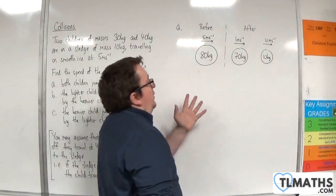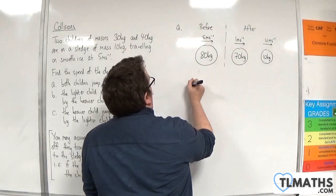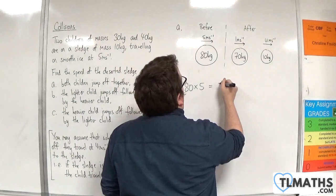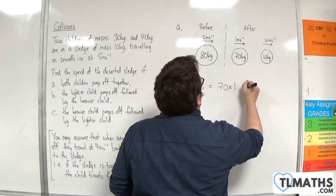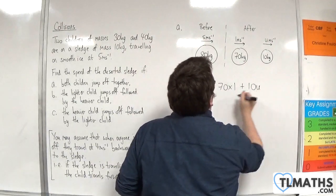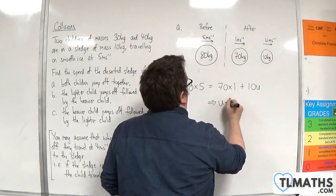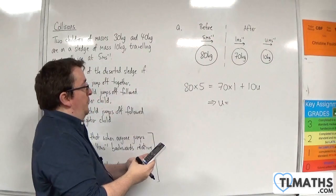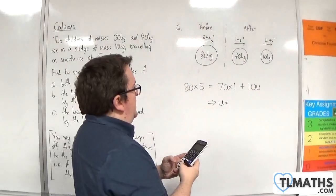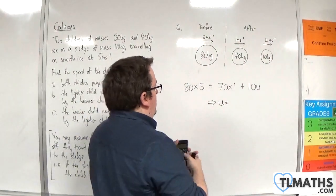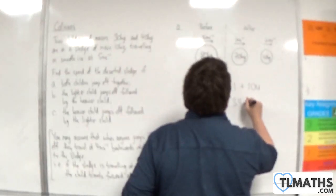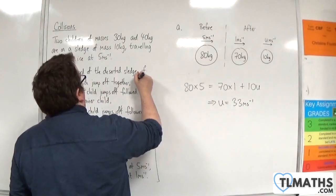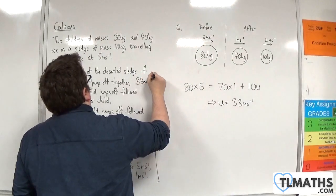Using conservation of linear momentum: 80 times 5 must equal 70 times 1 plus 10 times U. So, 80 times 5 minus 70, divided by 10, gives us 33 metres per second. That's the answer to part A.